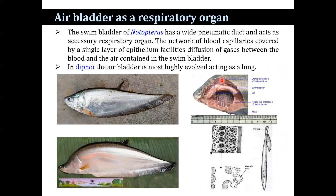The swim bladder of Notopterus has a wide pneumatic duct and acts as an accessory respiratory organ. The network of blood capillaries is covered by a single layer of epithelium, which facilitates diffusion of gases between the blood and the air contained in the swim bladder. In Dipnoi, the air bladder is highly evolved, acting as a lung; it is vascular and contains many alveoli-like structures. In Amia and Lepisosteus, a single air bladder is present which opens dorsally into the pharynx, whereas in Lepidosiren and Protopterus, the air bladder is bilobed and opens ventrally to the pharynx.